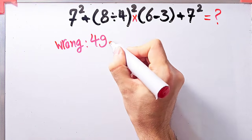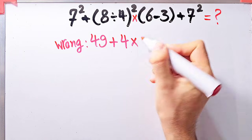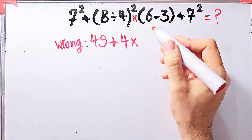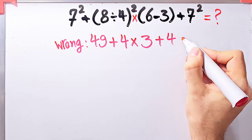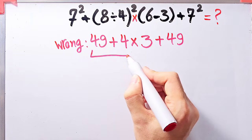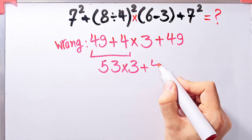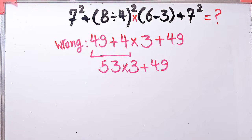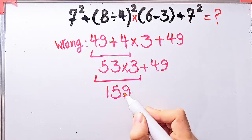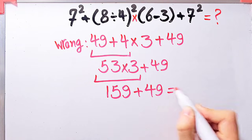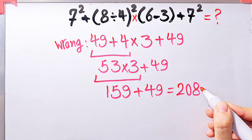In the wrong approach, some people compute 7 squared equals 49, then 49 plus 8 divided by 4 which equals 2, and 2 squared equals 4. Then 4 times 6, with 6 minus 3 equals 3. Then 49 plus 4 equals 53, and 53 times 3 equals 159. Finally 159 plus 49 equals 208. They say the answer equals 208, but this is definitely wrong.